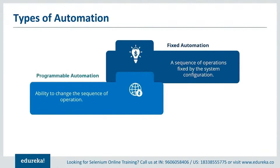Let's take a look at programmable automation. Programmable automation can be used to change the sequence of any operation based on the requirements specified by the user. It has made it to the front end of the user interface by providing various options to the user to edit the sequence as per their requirements.